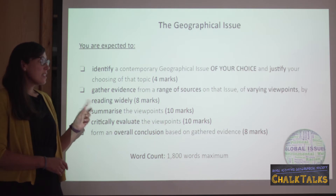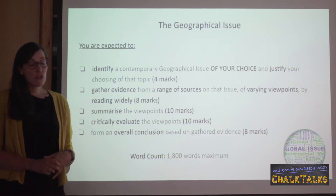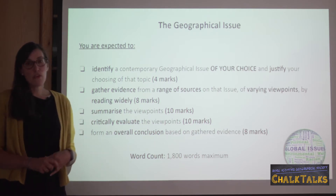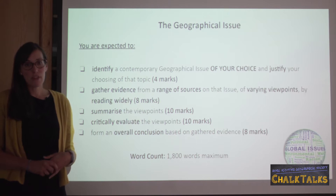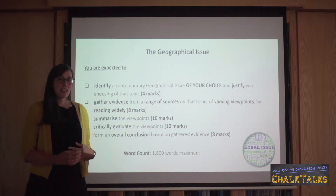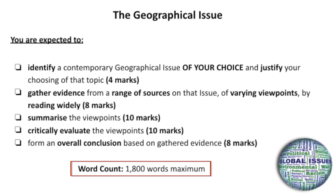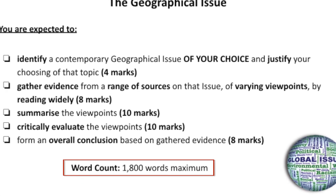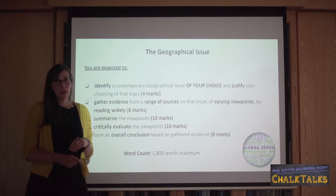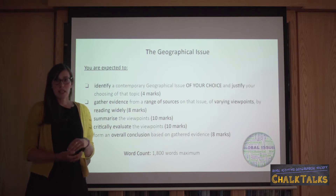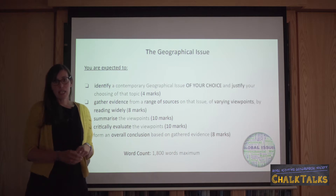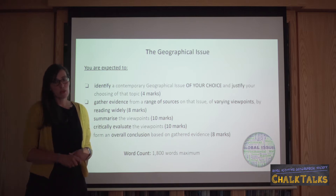For example, identifying a contemporary geographical issue of your choice and justifying the choosing of that topic is worth four marks — that's one of five sections totalling 40 marks for the geographical issue. There is a maximum of 1,800 words available to the issue essay. If you exceed this amount by over 10% a penalty will be awarded, but things like the front cover, the bibliography, and any references to maps, diagrams, or photographs would not be included in the word count.